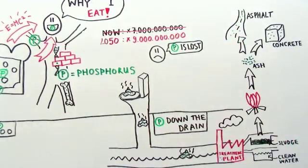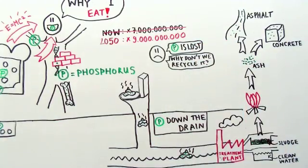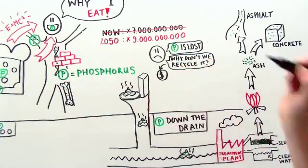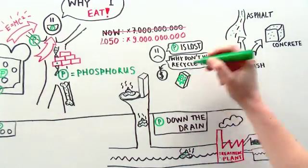It's a waste to lose this phosphorus. So why don't we recycle it? It costs money to extract the valuable substances from the sludge. And right now, fertilizer is so cheap that recycling can't compete.